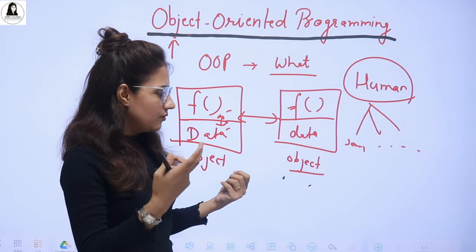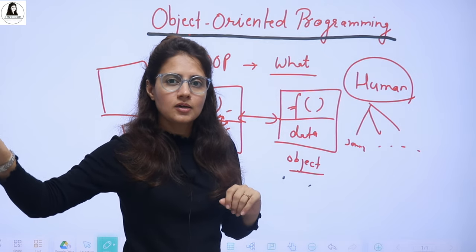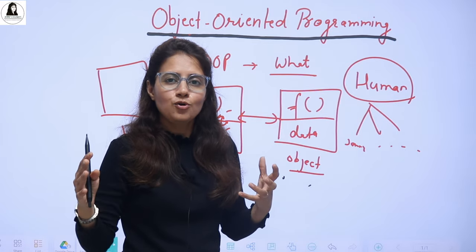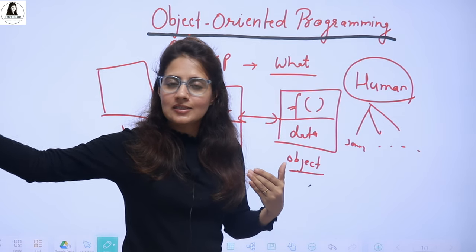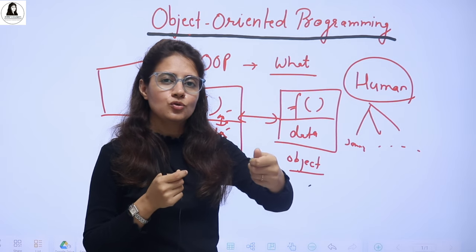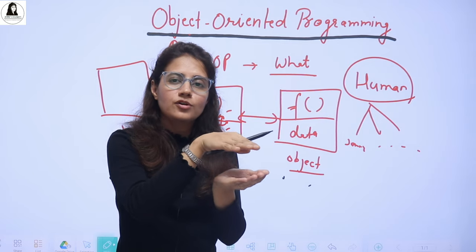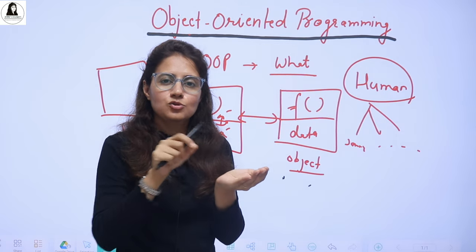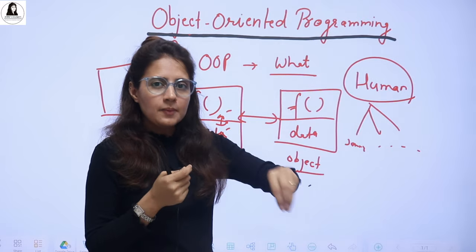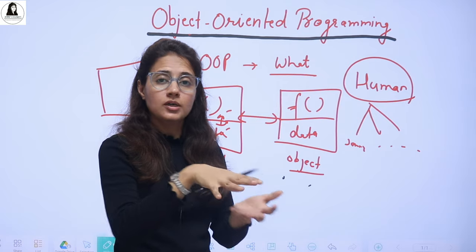Because you can implement abstraction here. Abstraction means — in real life, there is a switchboard. Once you press the switch to turn on a fan, that's it, the fan is on. You don't know what is happening behind the scene — there are wires, how electricity is passed, and so on. Similarly, with the remote of an AC, you just switch it on and that's it. You don't know what is happening behind the scene. You only see the interface — those buttons — you press a button and the functionality is done. So this is abstraction: you don't know the implementation, you only know what you need to know. That is the kind of abstraction we can achieve with the OOP approach.